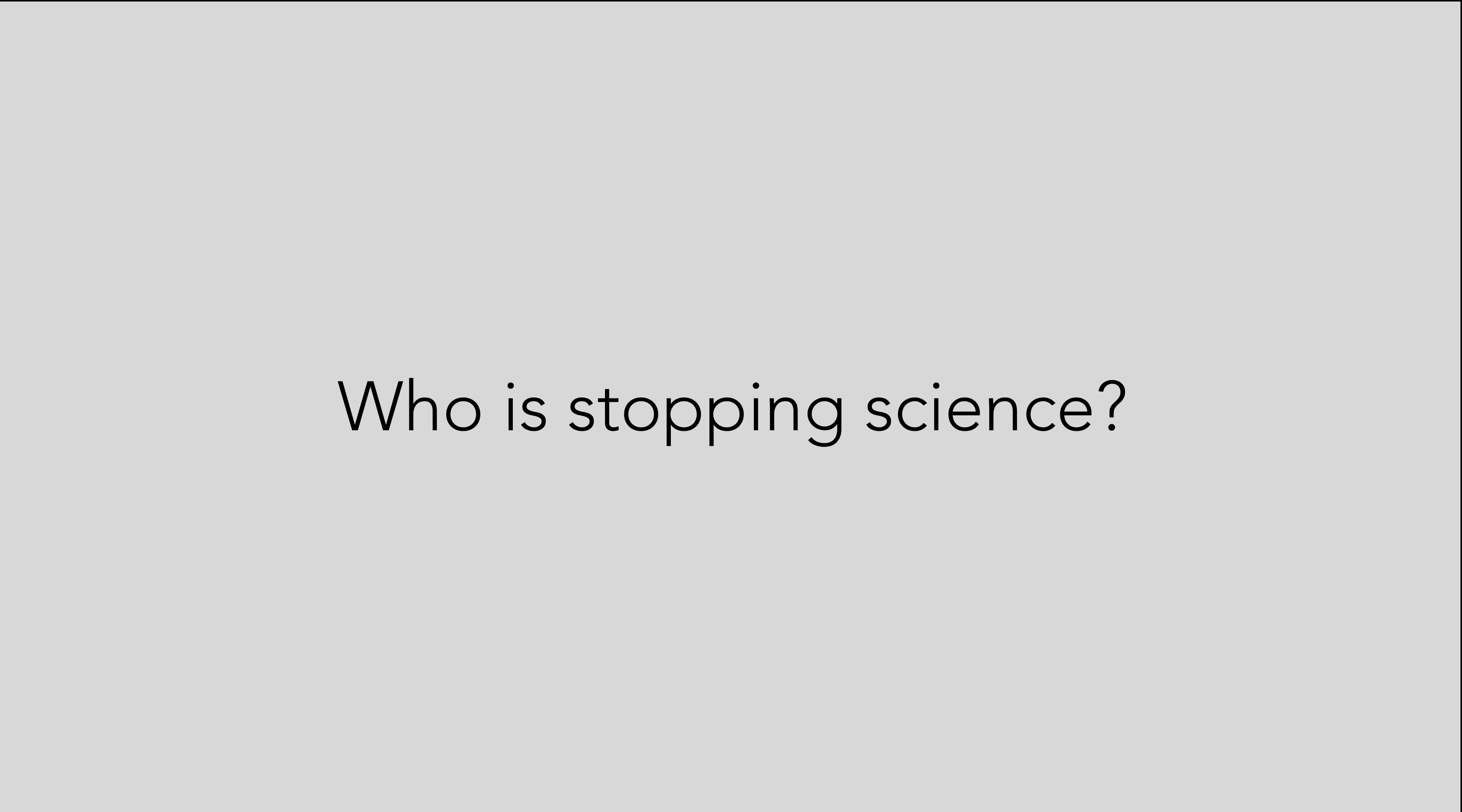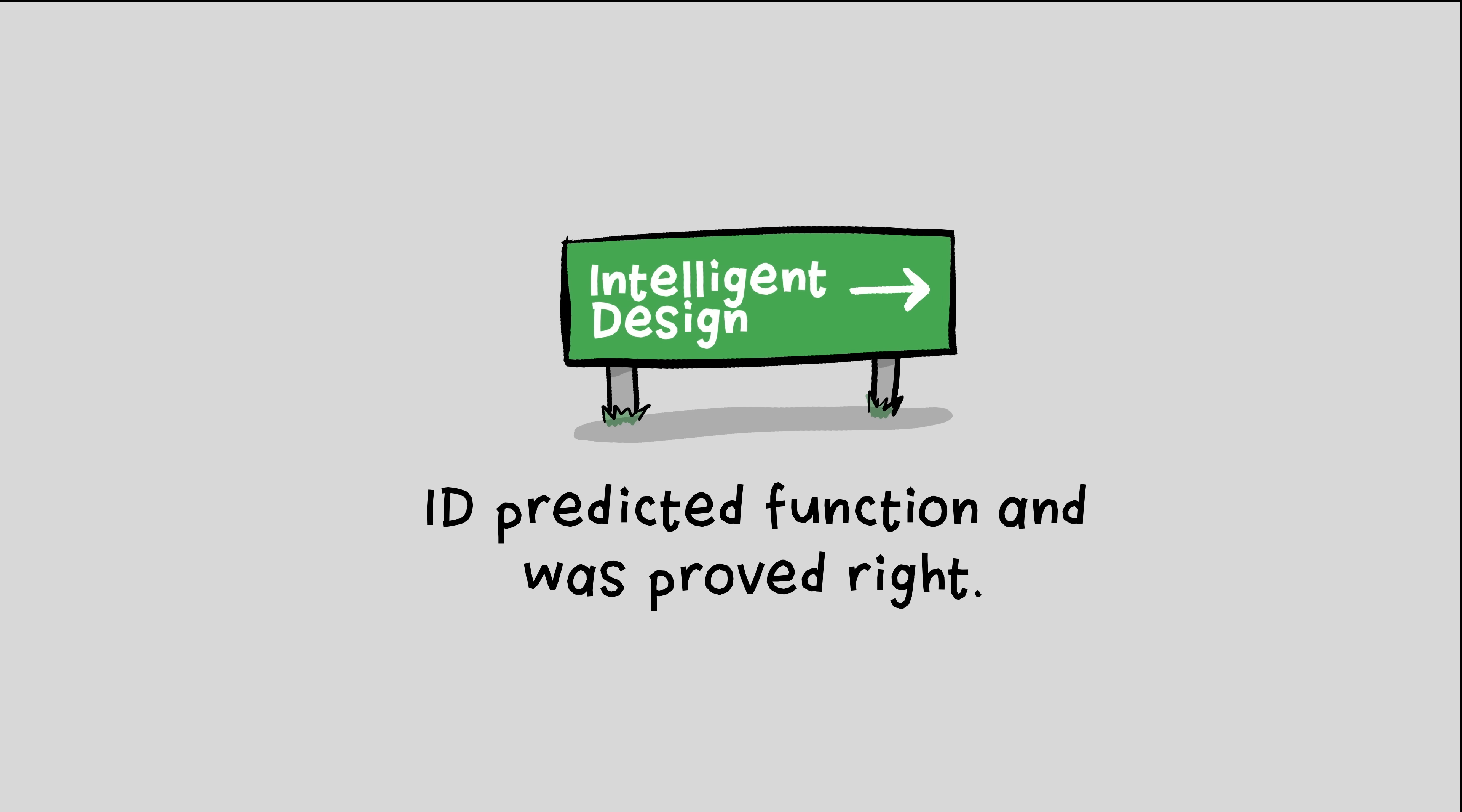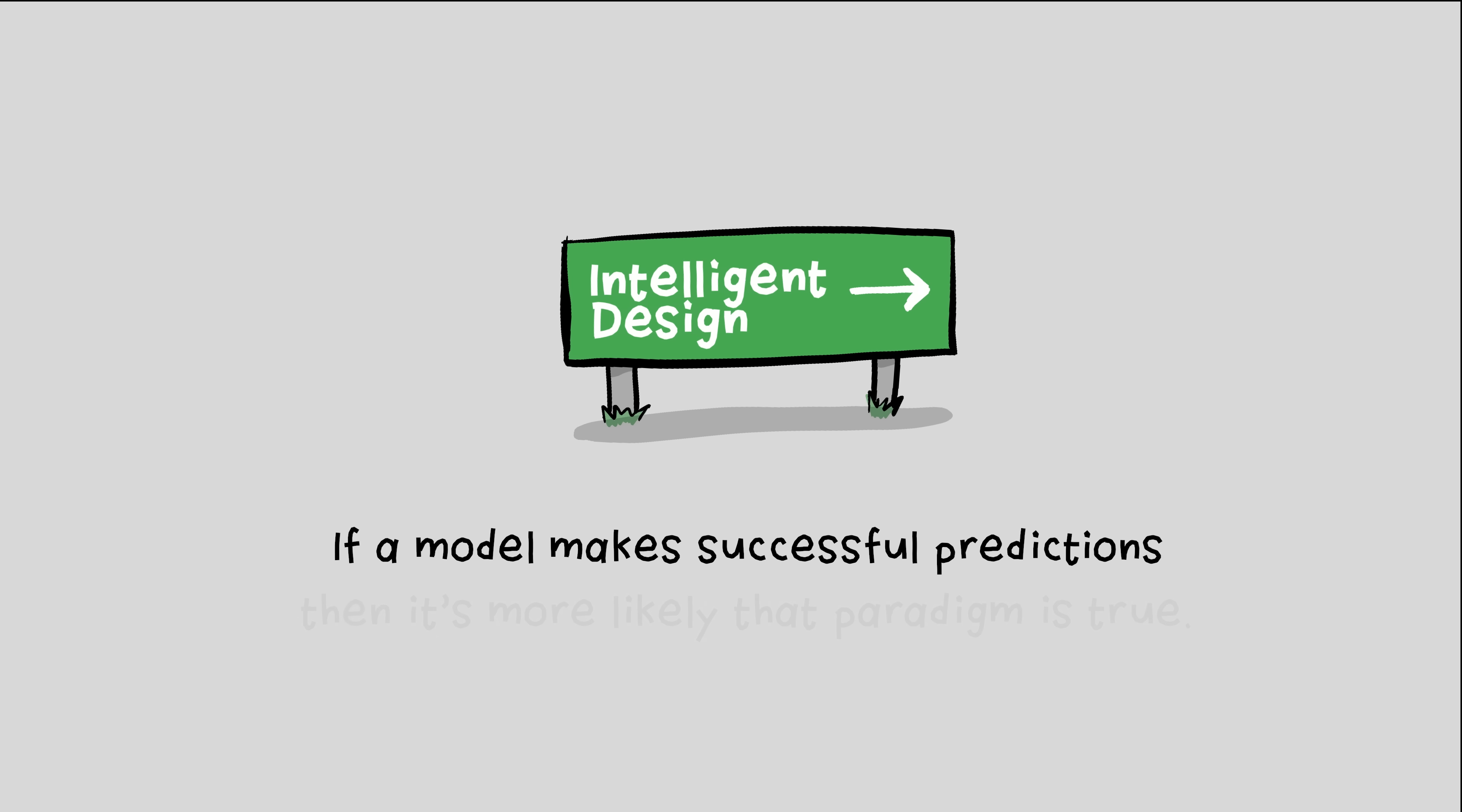Who is stopping science? Evolution's predictions about junk DNA were wrong, and for a long time repelled researchers from progressing science forward. ID predicted function, and was proved right. Intelligent design makes better predictions than the standard evolutionary model. And in science, if a model makes successful predictions, then it's more likely that paradigm is true.